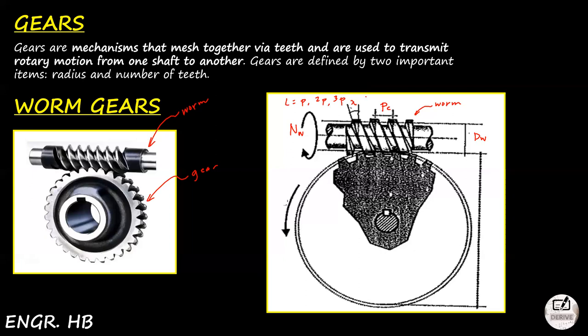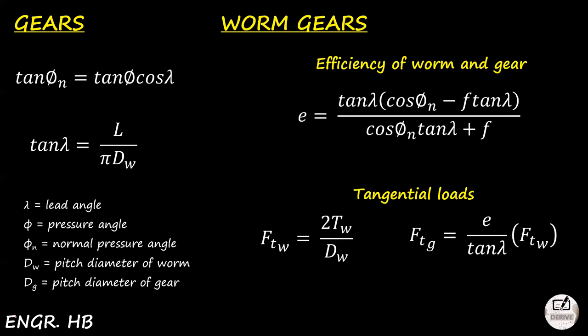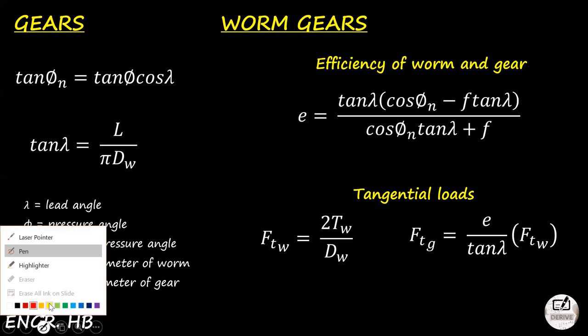The gear — the bigger body — is the worm wheel. The worm has speed NW and the gear has speed NG. This measurement represents the diameter of the gear DG. Now let's look at the formulas. These are the important angles in the worm gear setup.